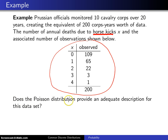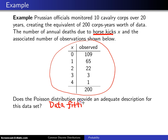The question is: does the Poisson distribution provide an adequate description for this particular dataset? This is something in statistics known as data fitting, and what we're going to try to do is fit the Poisson distribution to this particular dataset.